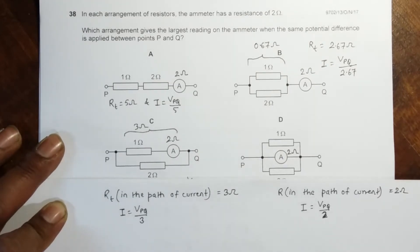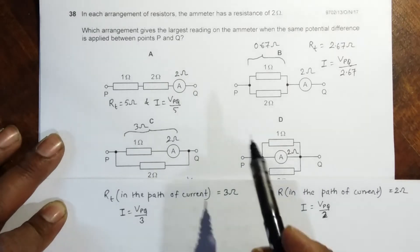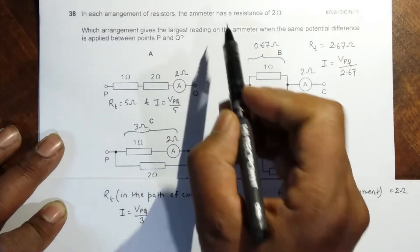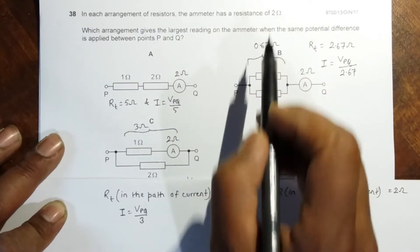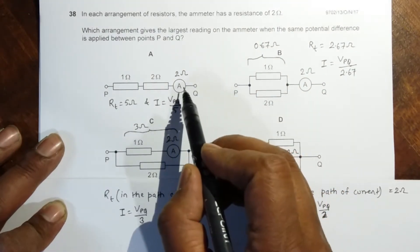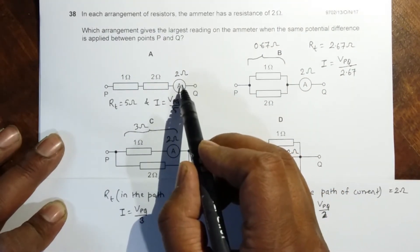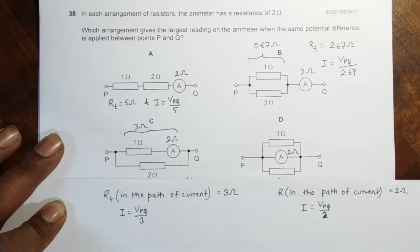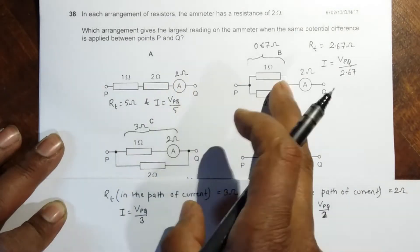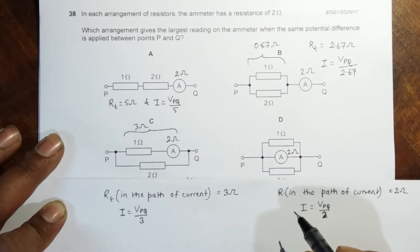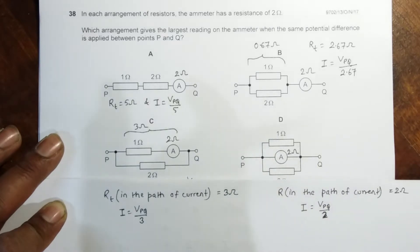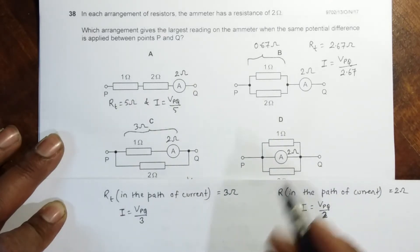This is the problem of the 2017 October/November season, Paper 1, Question 38. In each arrangement of resistors, the ammeter has a resistance of 2 ohms, so I have written 2 ohms for all the ammeters in this figure. We have to find which of these arrangements gives the largest reading on the ammeter, meaning the ammeter should have the highest amount of current flowing through it.